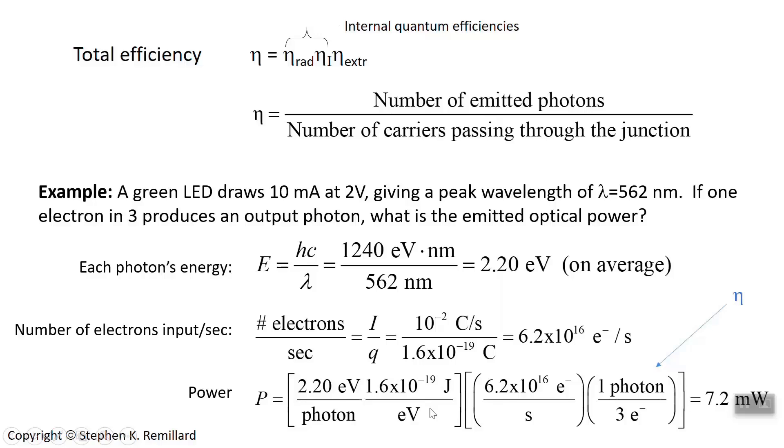And then you have to take the number of electrons that went in each second, 6.2 times 10 to the 16th, and multiply by a third, because that's the efficiency. One photon comes out for every 3 electrons. And you get 7.2 milliwatts. That's the output power.